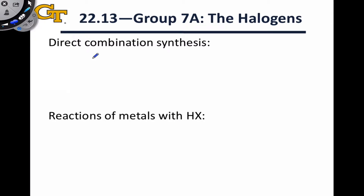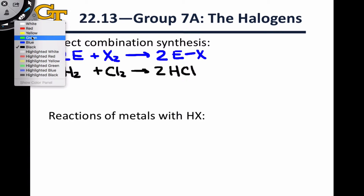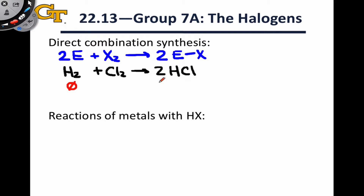The first reaction type is direct combination synthesis. This typically involves the reaction of two atoms with an elemental halogen to form products in which the E atoms have bonded to the X atoms. As an example, we can use the combination of elemental hydrogen with elemental chlorine to form two HCl. This is a redox process where hydrogen is oxidized to the oxidation state +1, driven forward by the strong oxidizing power of the elemental halogens.